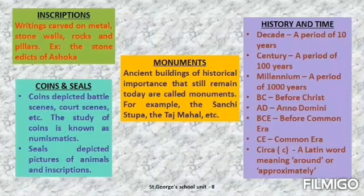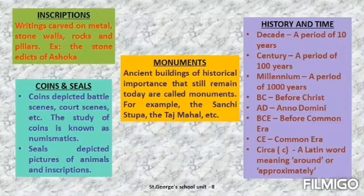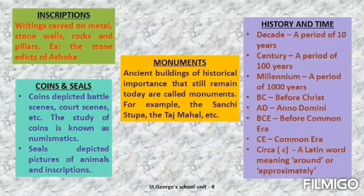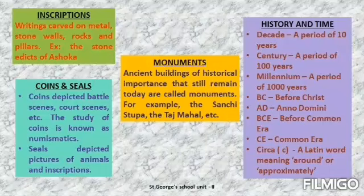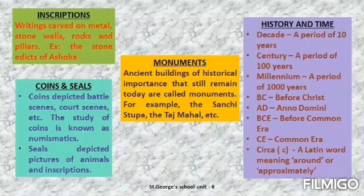These days we use the terms CE and BCE in place of AD and BC. CE stands for Common Era, while BCE stands for Before Common Era. An important thing to keep in mind: in the period before the birth of Christ, years are counted backwards — the year 200 BCE comes after the year 500 BCE on the timeline. CE is used when the exact date of an event is not known.